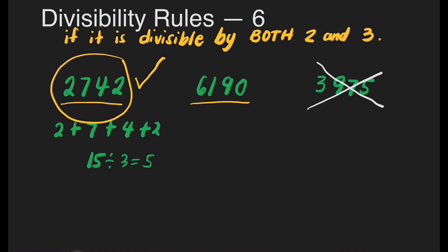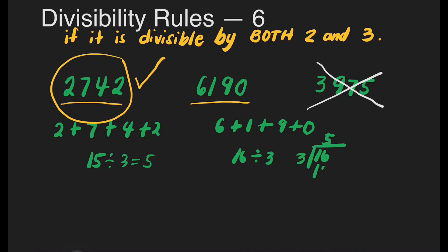How about the second number, 6,190? We add its digits: 6 plus 1 plus 9 plus 0. 6 plus 1 is 7, plus 9 is 16. If we divide 16 by 3, it has a remainder: 5 times 3 is 15, and 16 minus 15 is 1. So it has a remainder of 1, making 6,190 not divisible by 6.